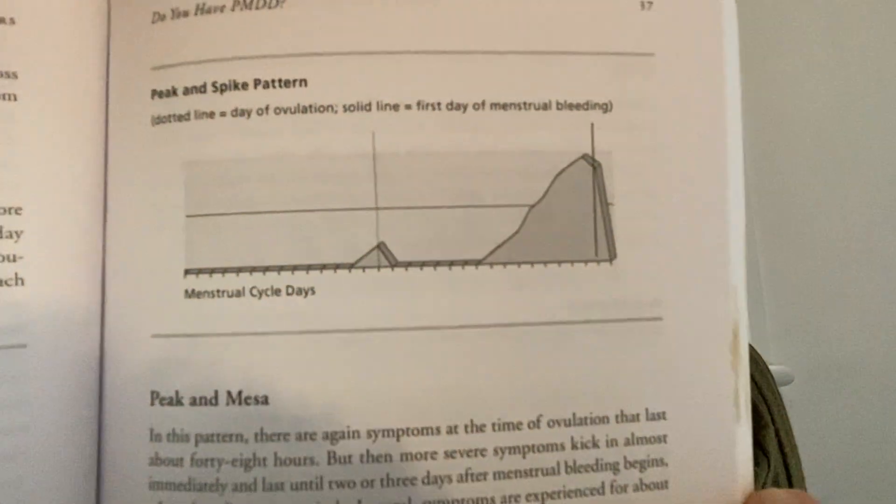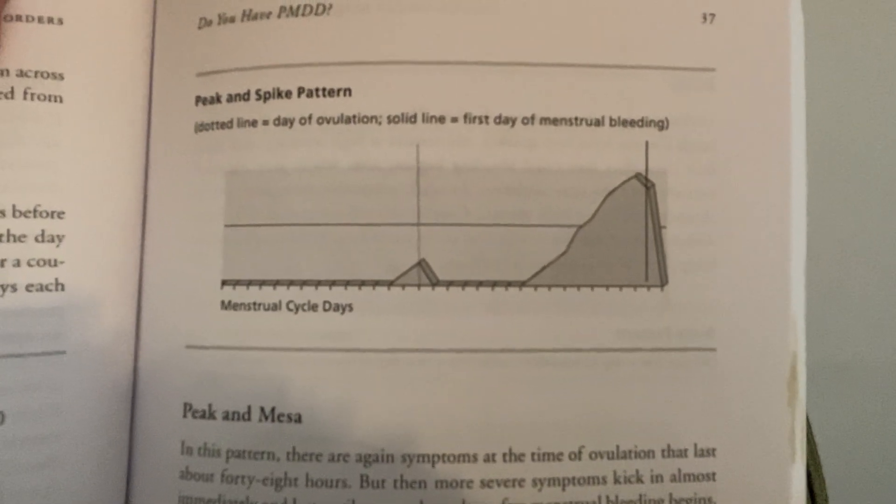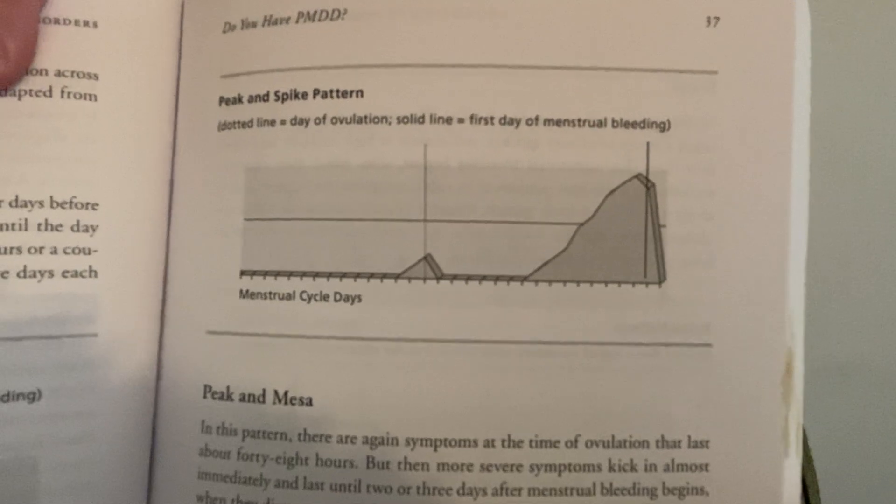The next pattern is the peak and spike. In this pattern there are a few mild symptoms at the time of ovulation that last about 48 hours, followed by more severe symptoms that begin about a week before a woman's period is due. There's a little spike during ovulation, then it reduces, and then there's a spike just before bleeding. Their intensity increases, although a bit more slowly than with the spike pattern, reaching their peak the day before menstrual bleeding begins. Symptoms disappear entirely within three days. In total, symptoms are experienced for about 12 days each month.